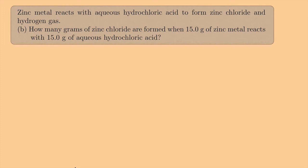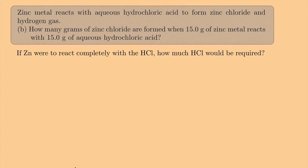Now let's look at Part B. Zinc metal reacts with hydrochloric acid to form zinc chloride and hydrogen gas, and we're told we have 15 grams of zinc metal and 15 grams of hydrochloric acid. Since they're giving us amounts for both reactants, this is a limiting reactant problem. We need to figure out which one will limit our reaction. Let's rewrite the balanced equation: Zn(s) + 2 HCl(aq) → ZnCl₂(s) + H₂(g).